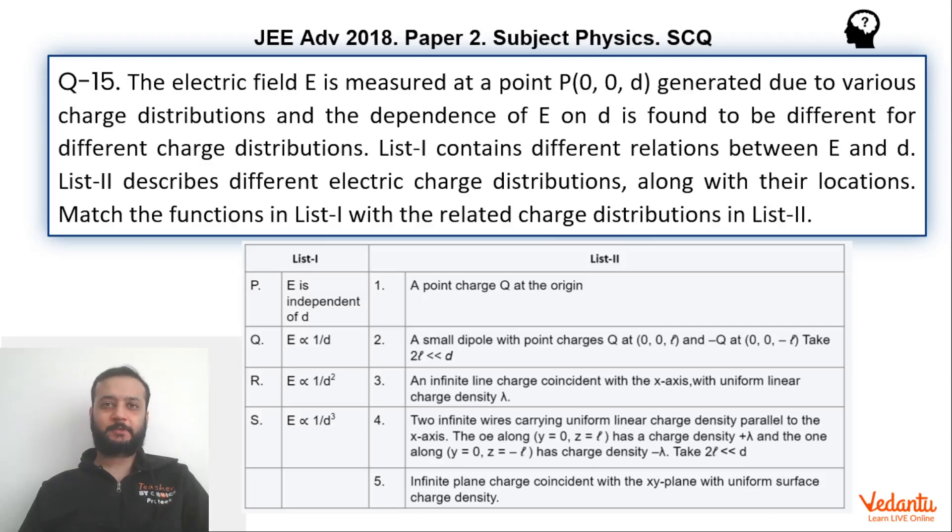Hi dear students. Let's see this question that came in JEE Advanced Paper 2 Physics in the year 2018. In this question, basically this question is from electrostatics and this is based on matrix match type. The question is simple, nothing critical about this and I'm sure that almost all the students would have done this without much problems.